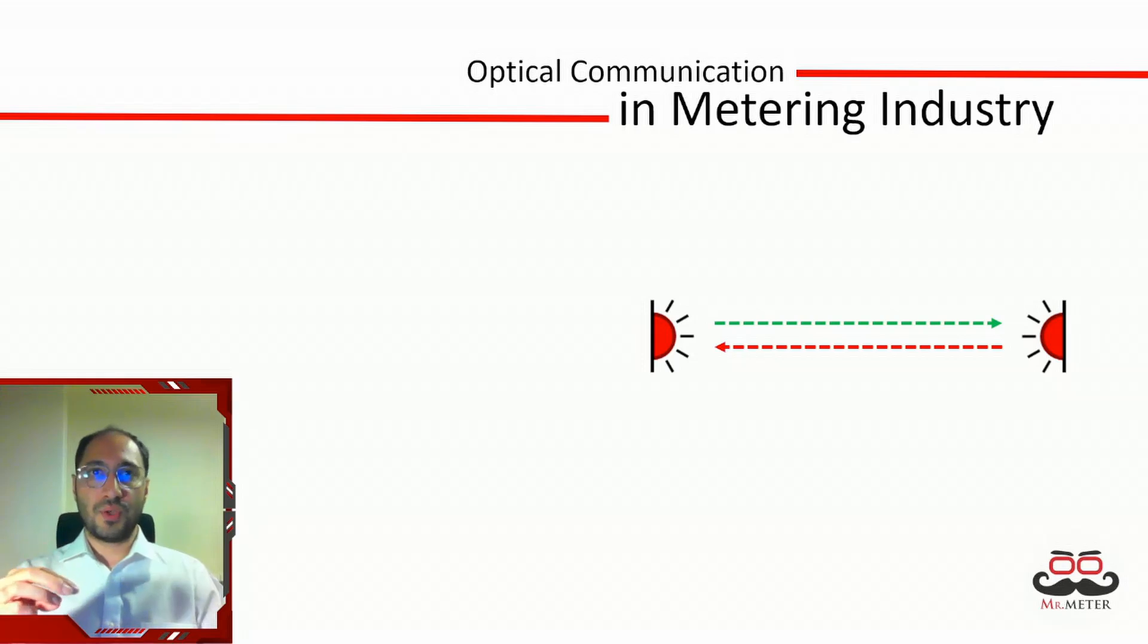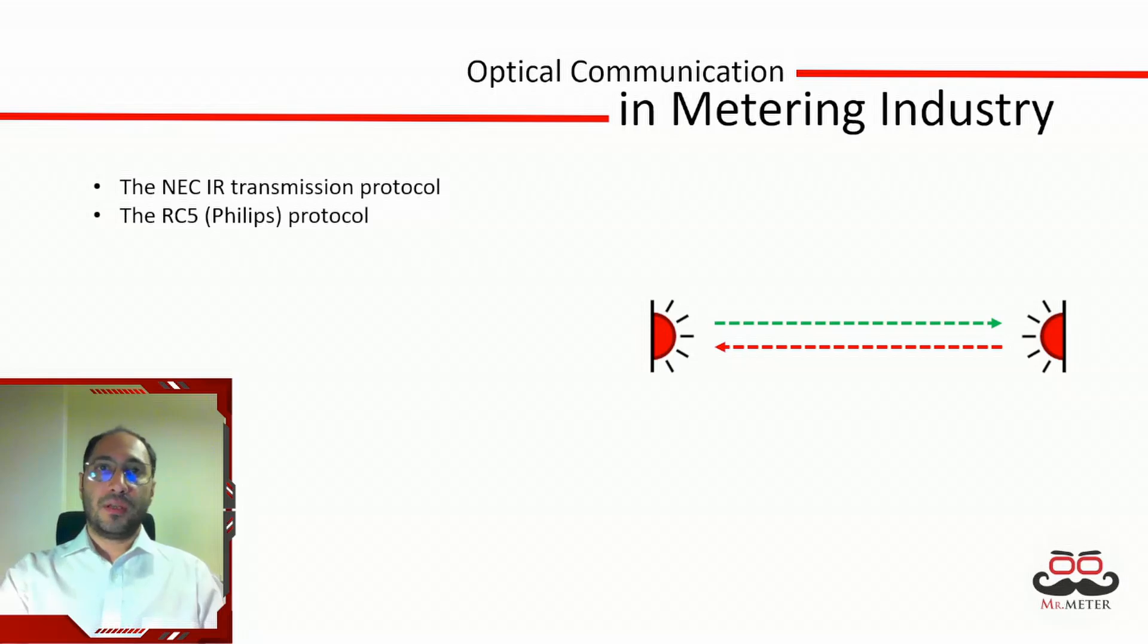There are various protocols used in infrared communications, but we will cover only two famous ones which are the NEC IR transmission protocol and the RC5 or the Philips protocol. Bear in mind that the communication protocols in infrared communications are only the way that enables both parties to better understand each other, thus reducing the interference by large amounts, and the main technique of flashing LED lights remains the same.